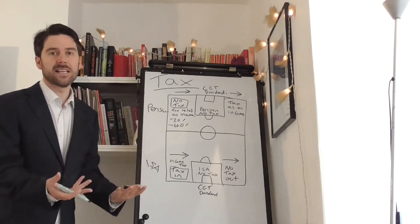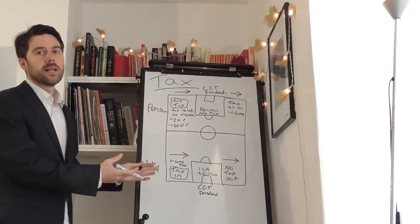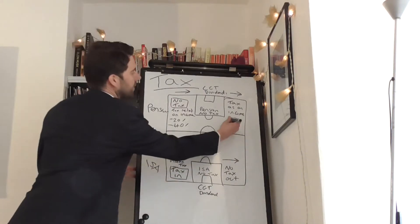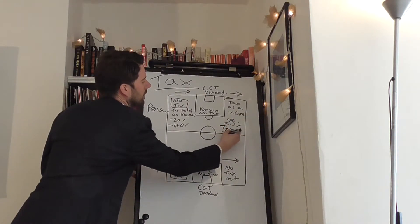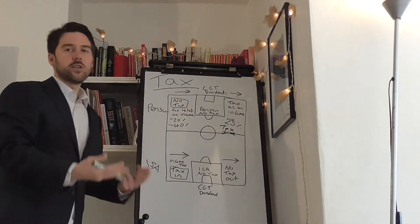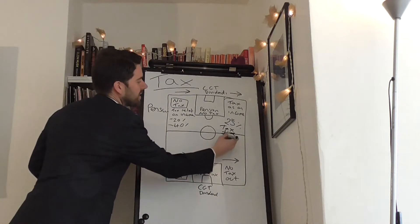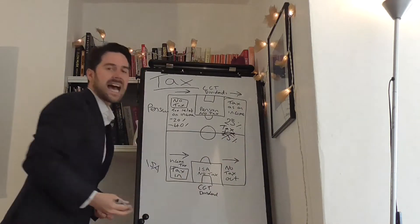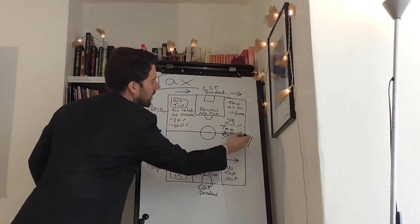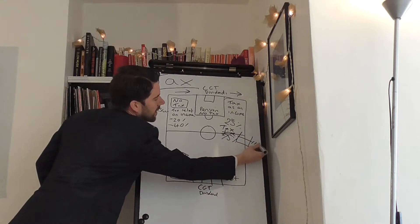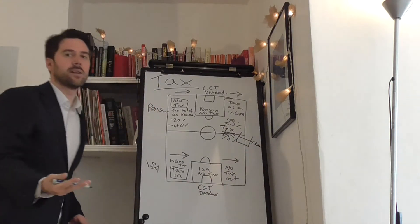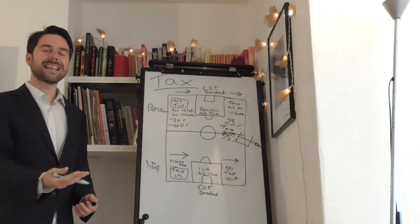We use the pig analogy in other videos. You get 25% tax-free that you can take, but the other 75% is taxed as income. You have a pot of money, and your income allowance is whatever it is this year, £11,000. You can take that amount as tax-free. Anything above that will be taxed as income.